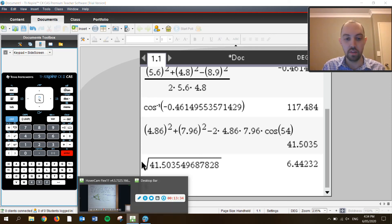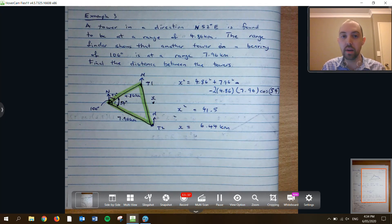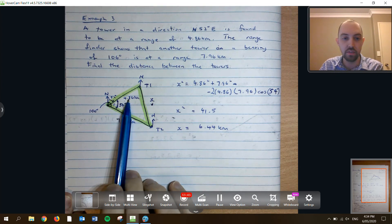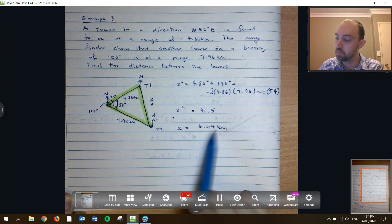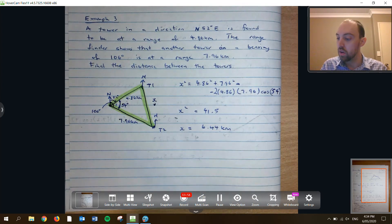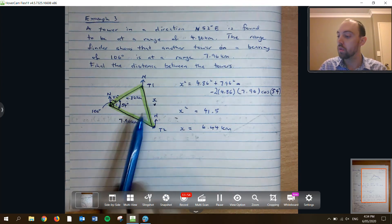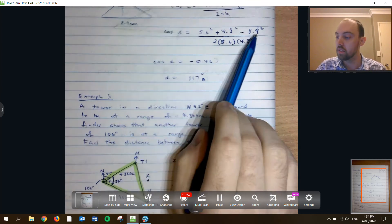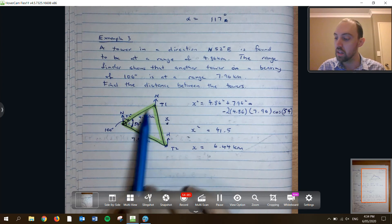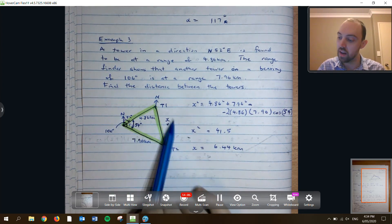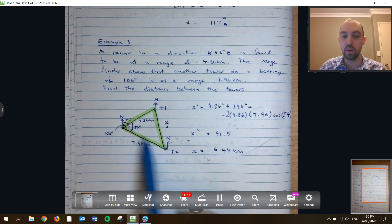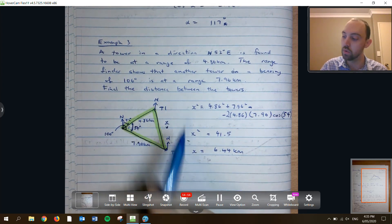And I'm going to give it to 2 decimal places because that's what the other values in my question were. They both have 2 decimal places or 3 significant figures. 4.86 and 7.96. So 6.44 kilometers. So pay attention to the take whatever side when you're finding an angle. And when you are trying to find a side you are finding the side opposite the angle that you're using. And that angle has to be in between the other two sides. That angle is included between those two sides A and B.